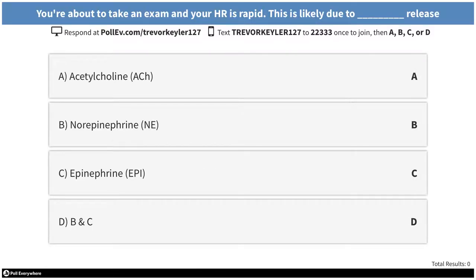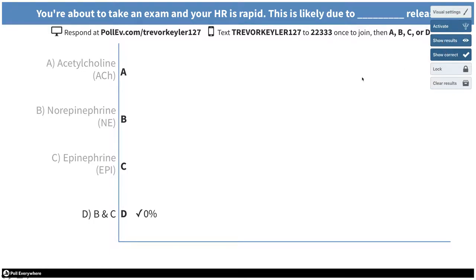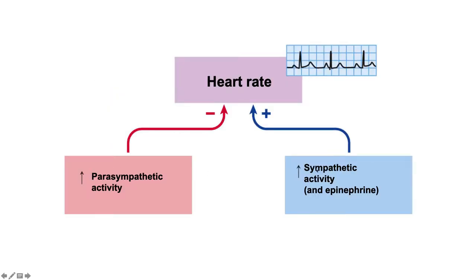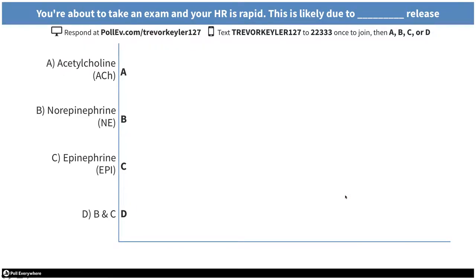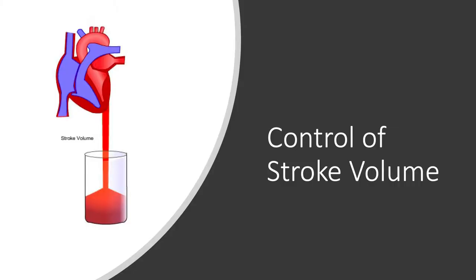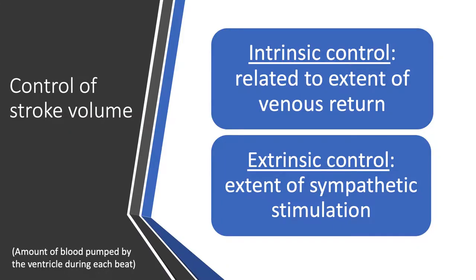You're about to take an exam and your heart rate is rapid — this is likely due to norepinephrine and epinephrine release. Norepinephrine is the sympathetic neurotransmitter, and epinephrine acts in the same manner, both increasing heart rate.